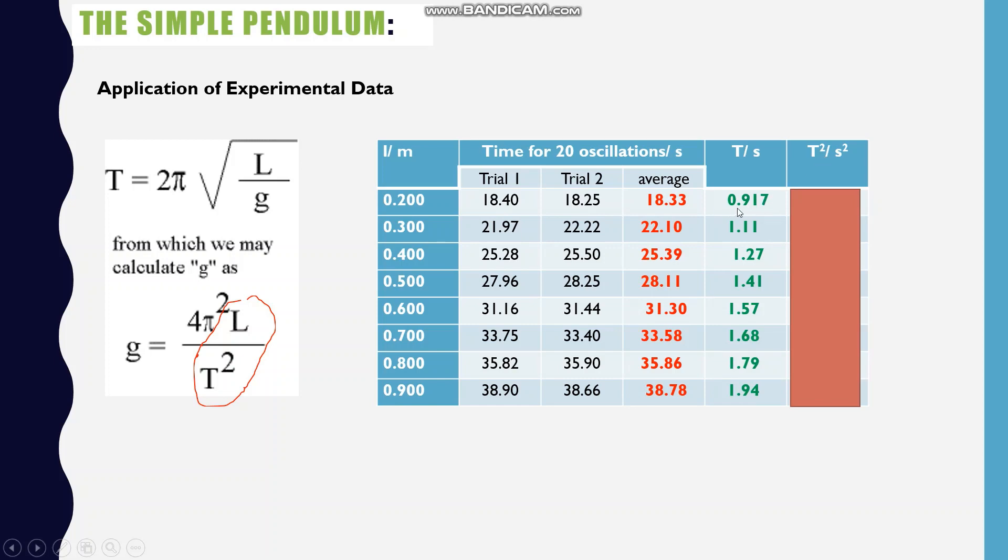These are our t values. And then we square t. Squaring the t values, we get the t squared values. In the next step, what we'll do is to plot a graph of L against t and also L against t squared, so that the relationship between them can be obtained.